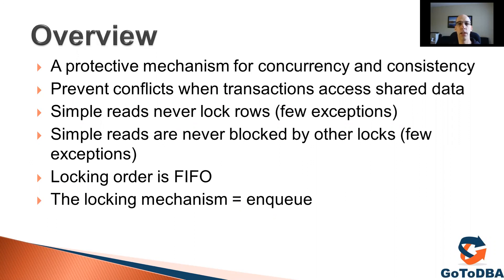Once you start changing data or structure, you might lock other people. The locking order is first-in-first-out: if user one is changing a row, user two is waiting for it, and user three is waiting as well, then once user one releases the lock, user two gets it first, then user three — in the order they requested the lock.